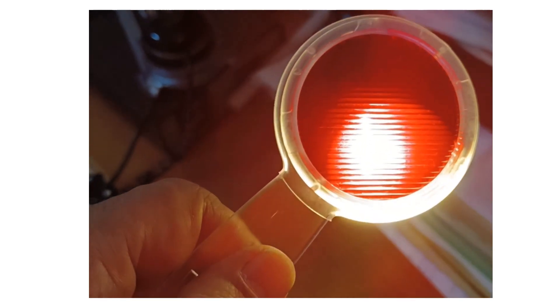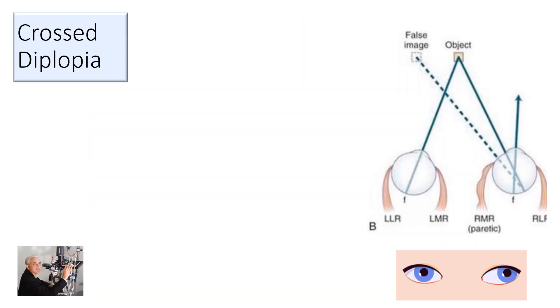Let's see what this will cause when somebody has got an exotropia. Just remember by the word X, X means there's a cross, so that patient will have a crossed diplopia.